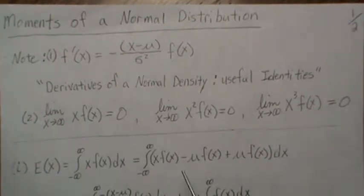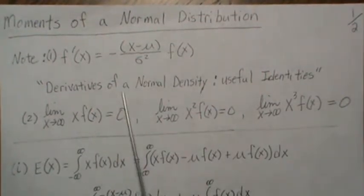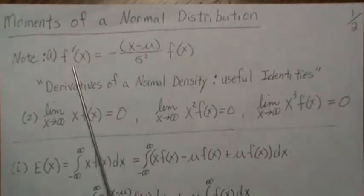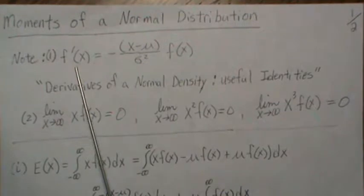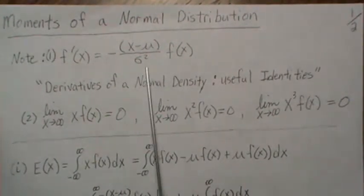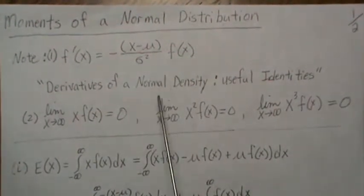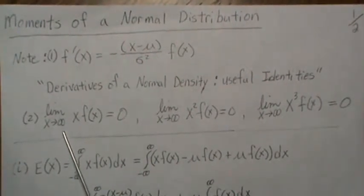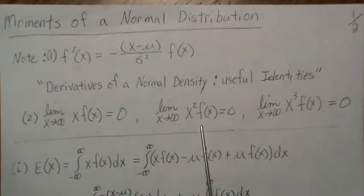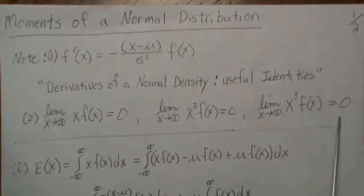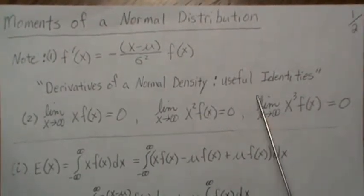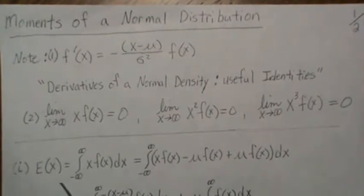In this video we use some identities that we derived in the video 'Derivatives of Normal Density: Useful Identities.' We showed that the first derivative of a normal density is equal to this, and also we showed some limiting results — that if you have x times a normal density and let x go to infinity, this is zero; the same if it's squared or cubed, these all limit to zero. So let's jump right in.